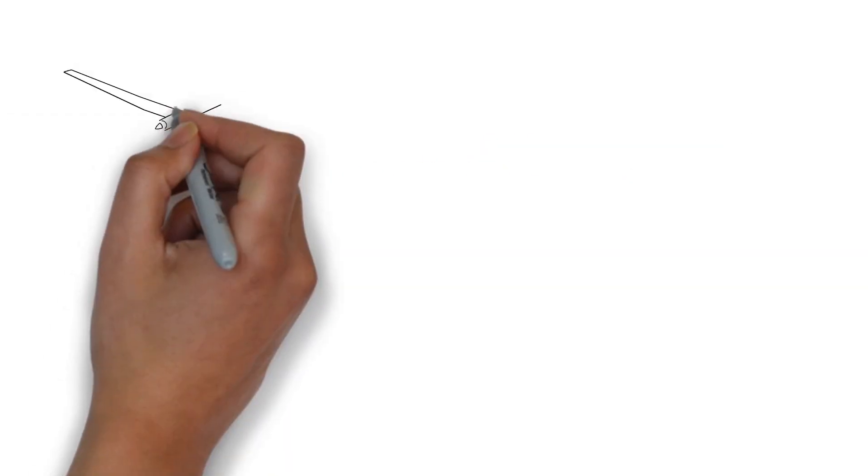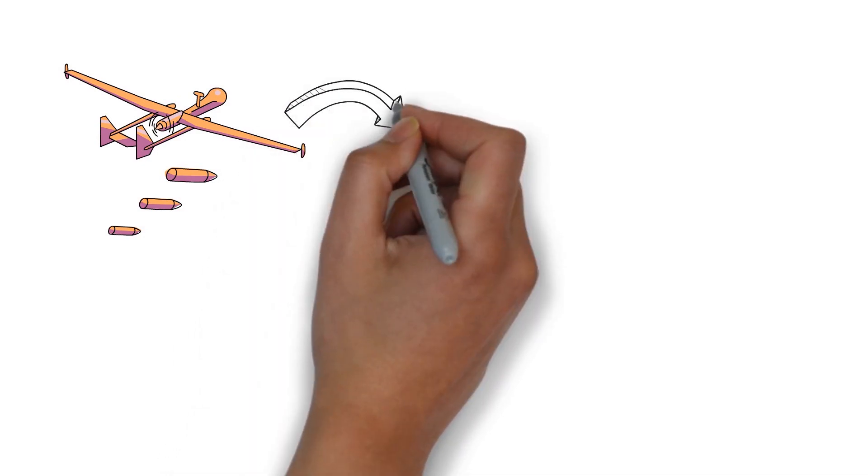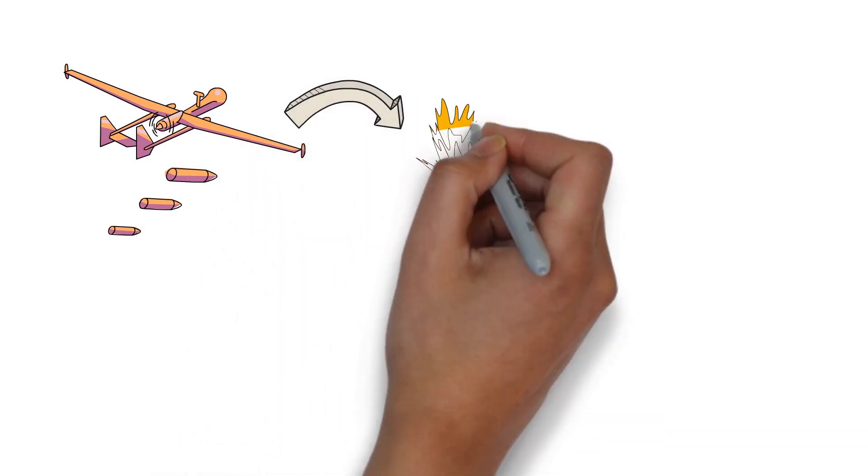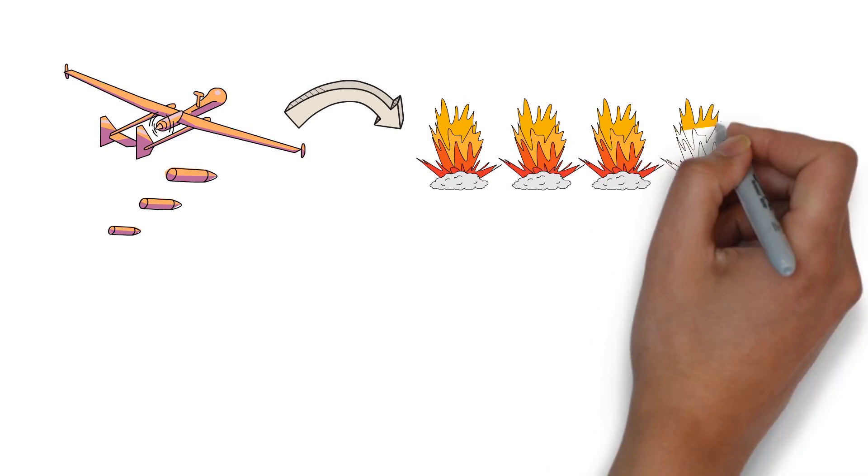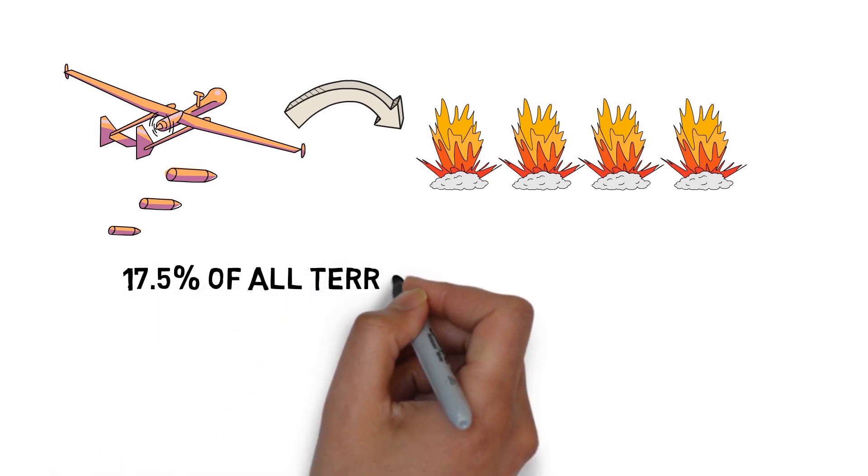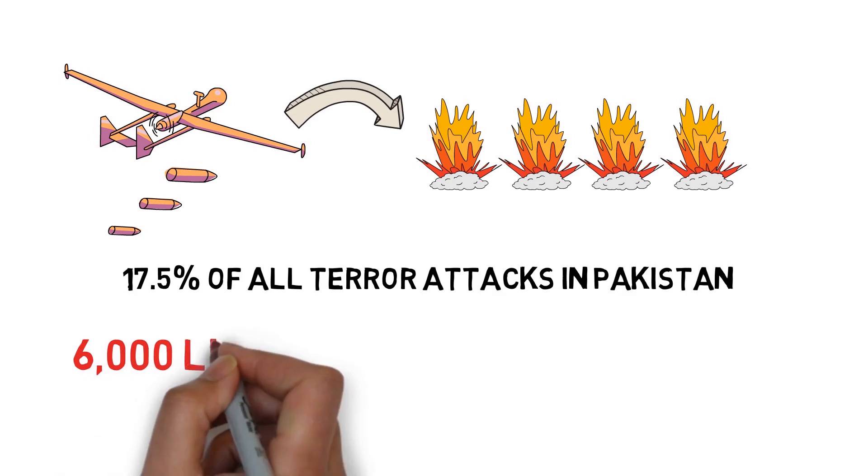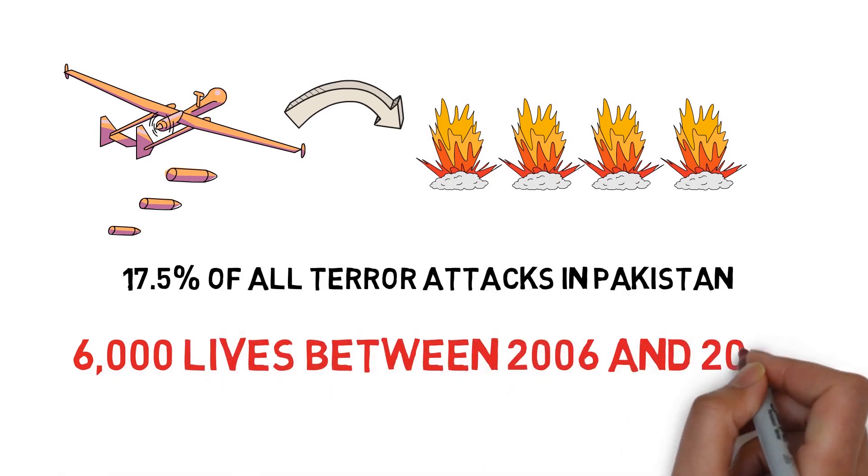Analyzing data from Pakistan, we find that drone strikes increase terrorism. On average, one U.S. drone strike results in four additional terror attacks in the next week. This means drone strikes are responsible for up to 17.5% of all terror attacks in Pakistan, amounting to a loss of 6,000 lives between 2006 and 2016.